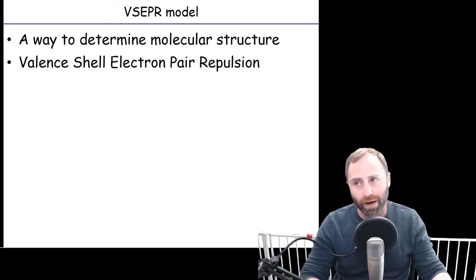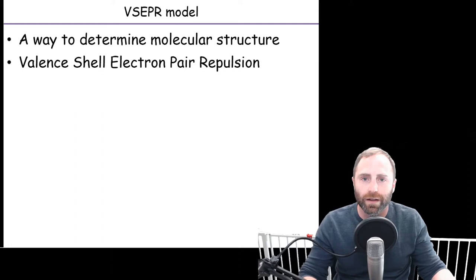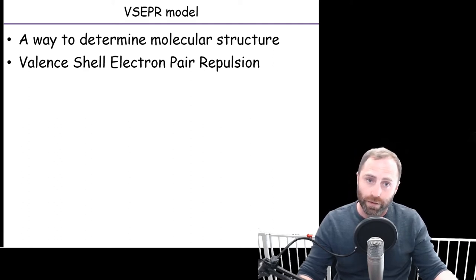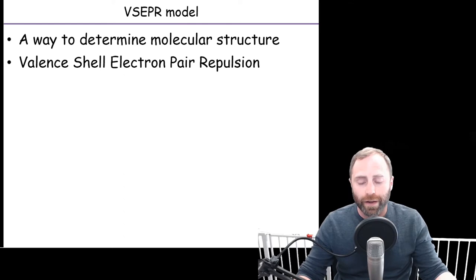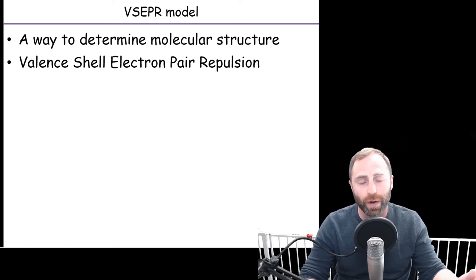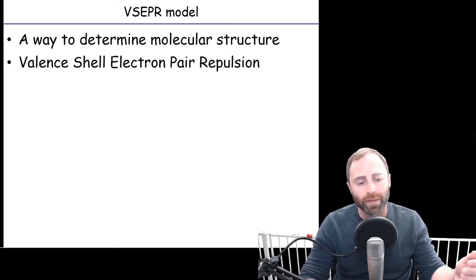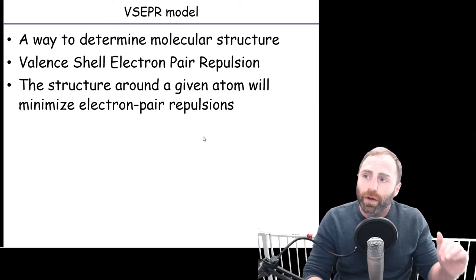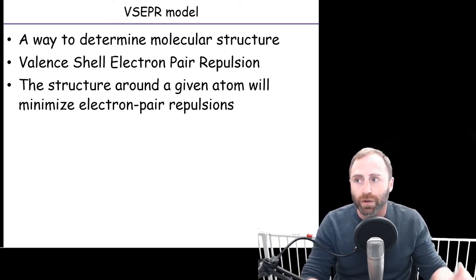VSEPR stands for valence shell electron pair repulsion. We're going to look exclusively at the valence electrons on molecules and the atoms within molecules, just like we did with Lewis structures. But now we're going to say that in three-dimensional space, those electron pairs — whether they're in bonds or whether they're lone pairs around our central atom — are going to try to repel one another as much as possible. They are going to orient themselves to have the least amount of interactions. This makes sense because electrons are negatively charged particles, and negatively charged things won't occupy the same space. At the end of the day, we're trying to minimize those electron pair repulsions.